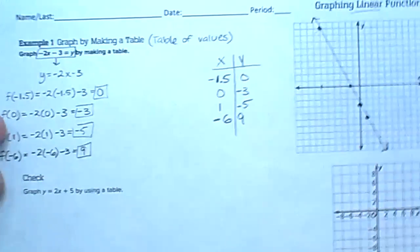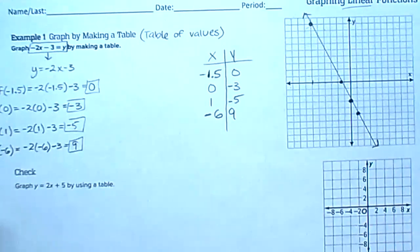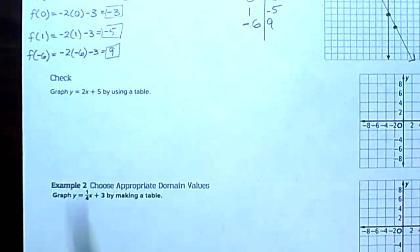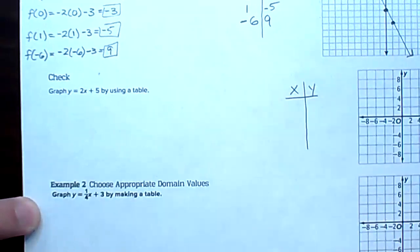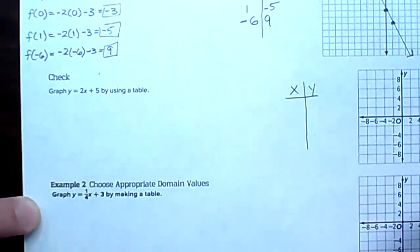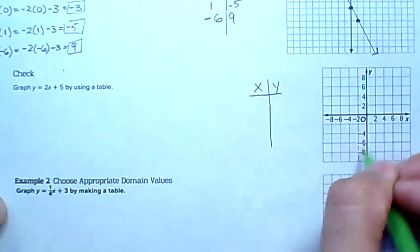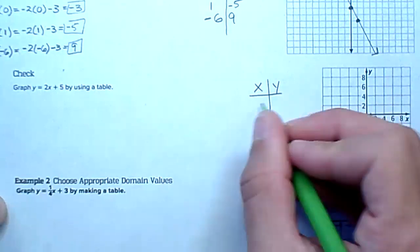That's all there is to this part. Pause the video and create your own table of values with three to four points, then resume and see if your line matches mine. We might not choose the same numbers, but our line should look the same. Feel free to use Desmos on a different tab to check your work.